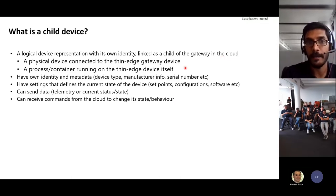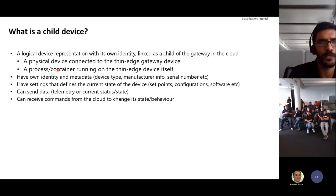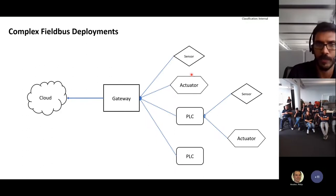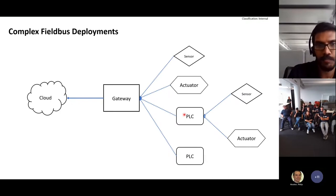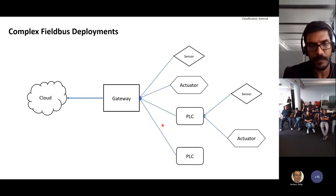These child devices can be real physical devices directly connected to the gateway, or they can be logical devices — a simple process or container running on the gateway. For example, with field bus devices like PLCs connected via field bus protocols, they can't directly push their data to the gateway, so you need a process running on the gateway that reads the data from those sensors over field bus, IO-Link, or similar protocols. This is the logical child device use case.